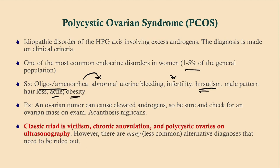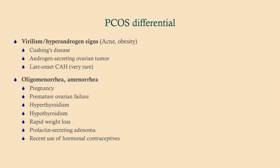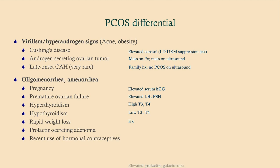What you should know is the classic triad: virilism, anovulation (which may manifest as infertility), and the sonogram appearance. If you've got a heavier woman coming in with facial hair saying she can't conceive, do a sonogram and look at those ovaries — they're very obvious in appearance. There are other alternative diagnoses to rule out since anovulation has a wide differential, as does virilism. An ovarian tumor can cause elevated androgens, so keep that in mind when you do a bimanual exam.